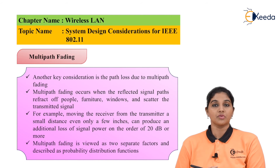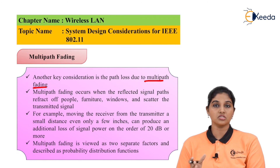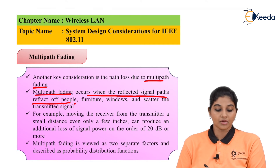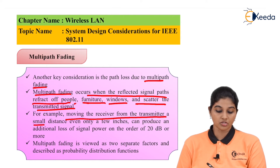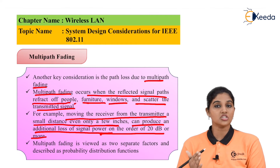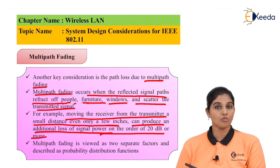Another key consideration is multipath fading. Multipath fading occurs when reflected signal paths are attenuated by people, furniture, windows, and scattered transmitted signals. Even moving the receiver from the transmitter by a small distance — even only a few inches — can produce additional signal power loss on the order of 20 dB or more.